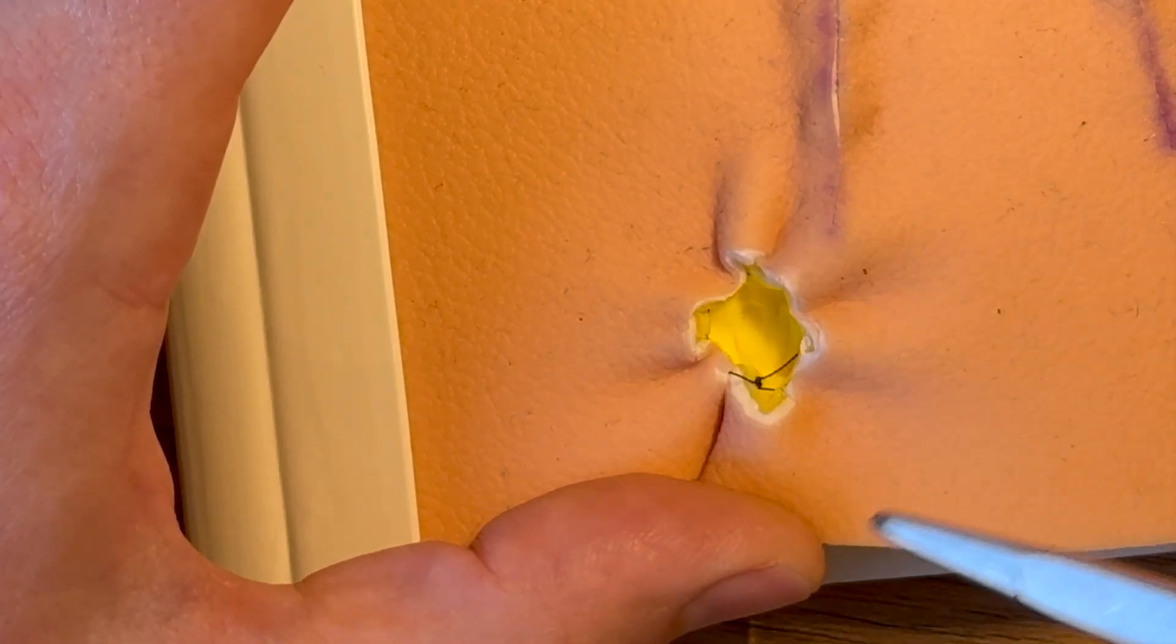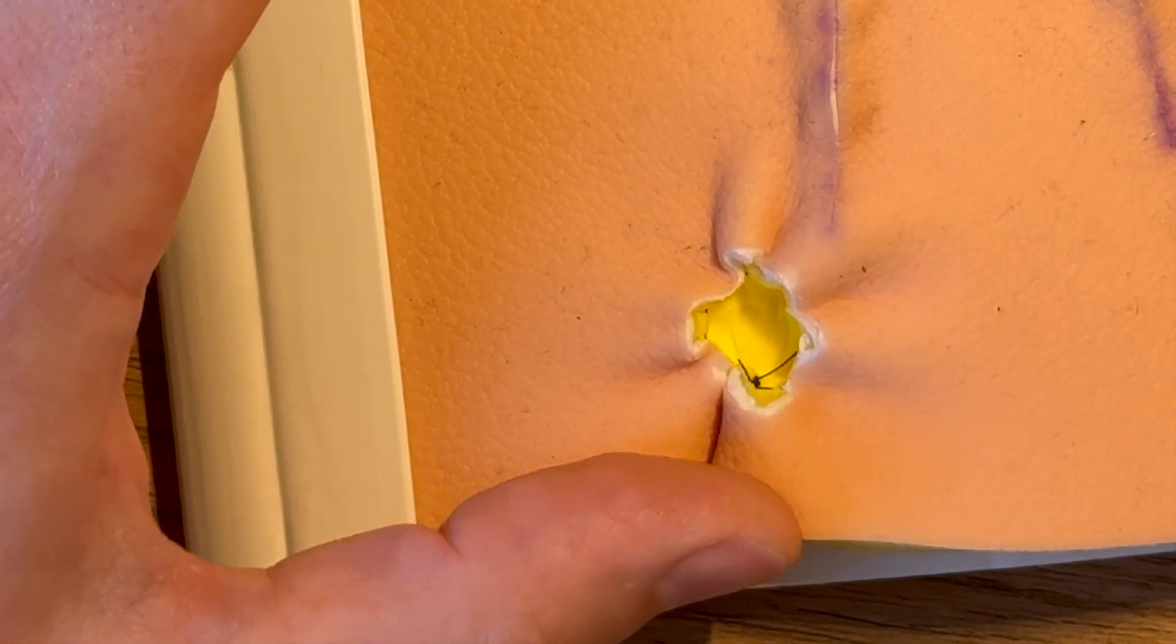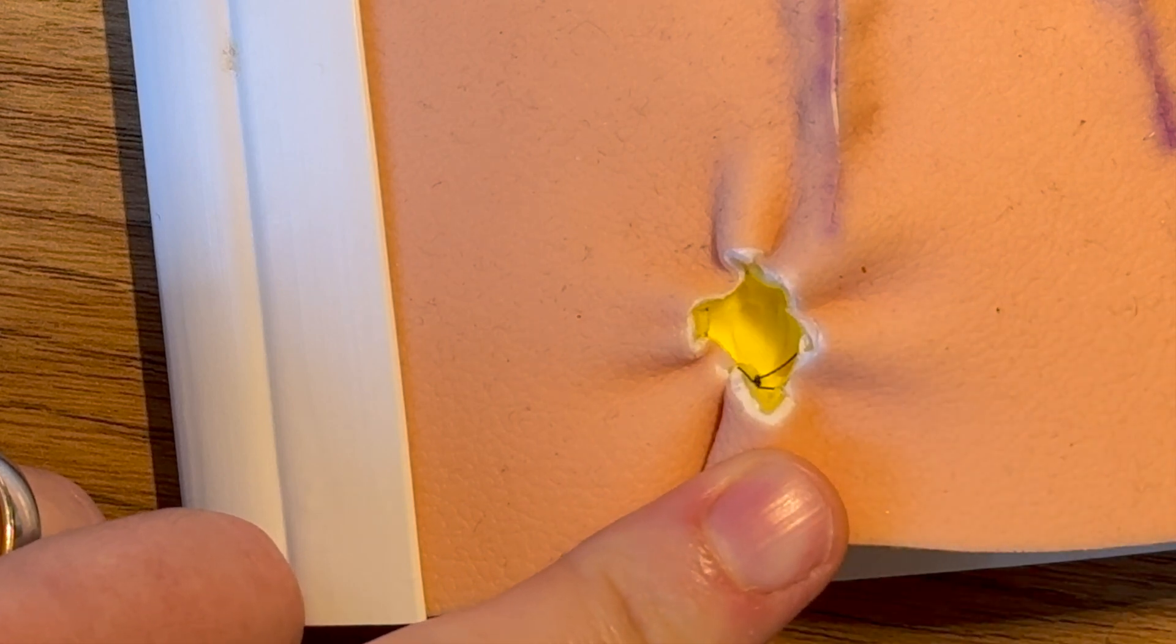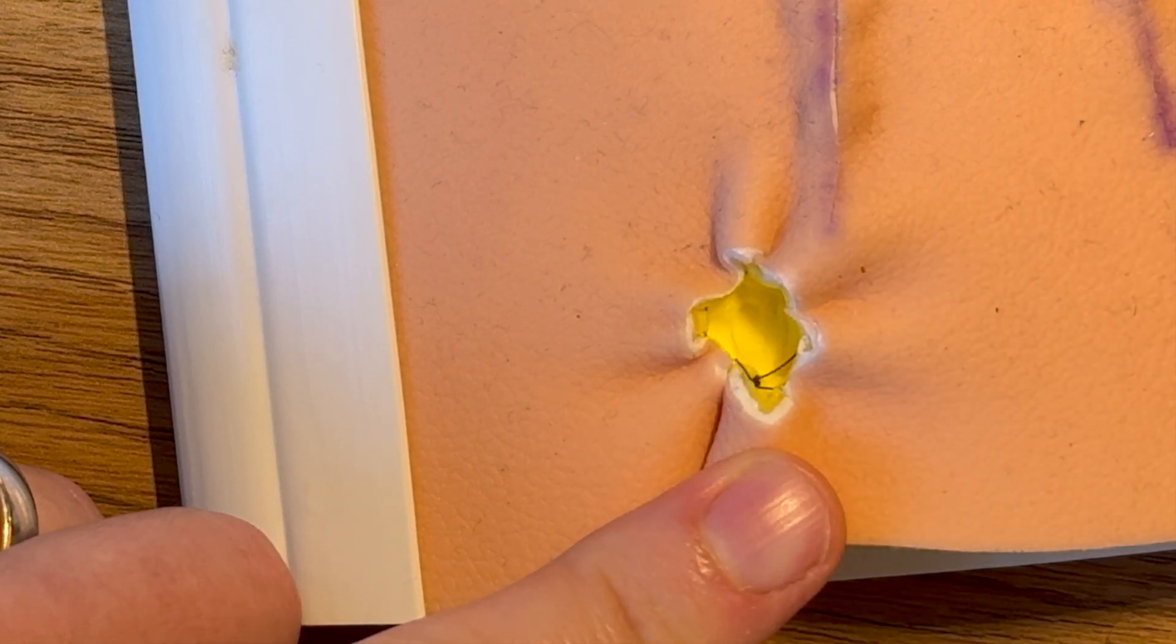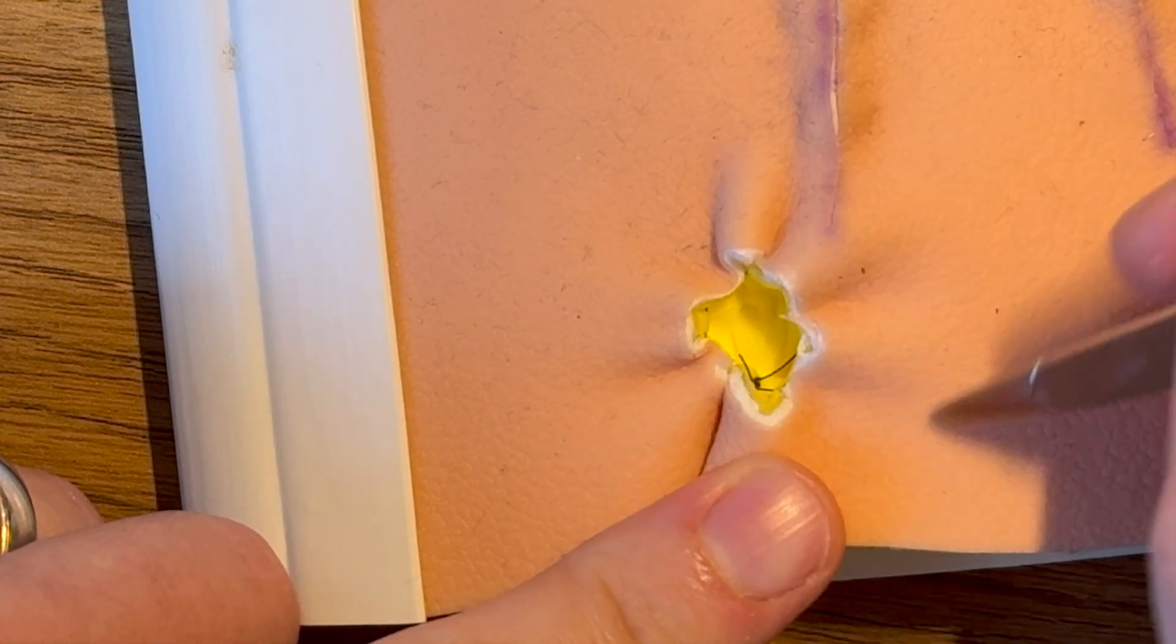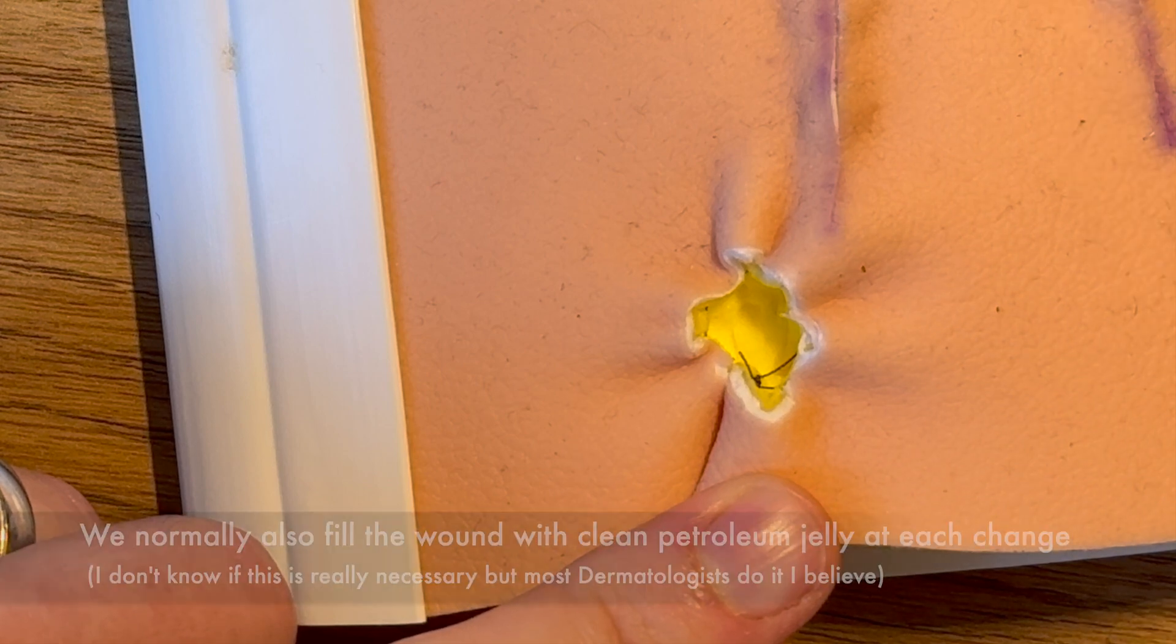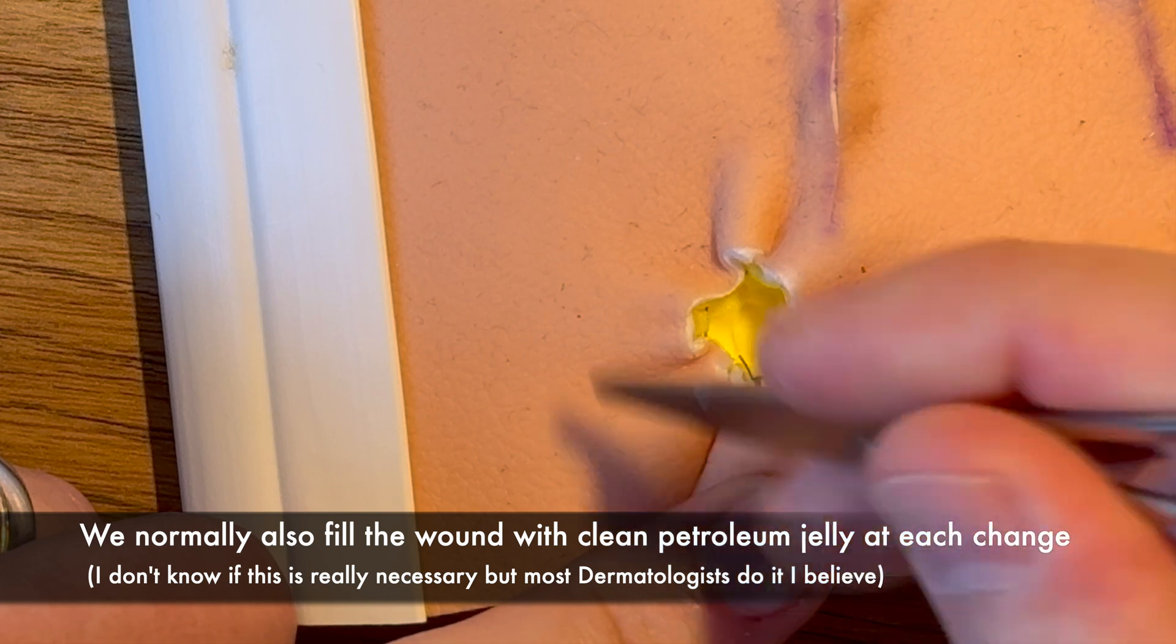And as far as dressings are concerned you'd usually put in an alginate dressing for a few days just while it's exuding in the first stage producing lots of slough. And then we change that to a hydrocolloid dressing and a patient could usually change that themselves at home every two or three days as it fills up and starts to detach.